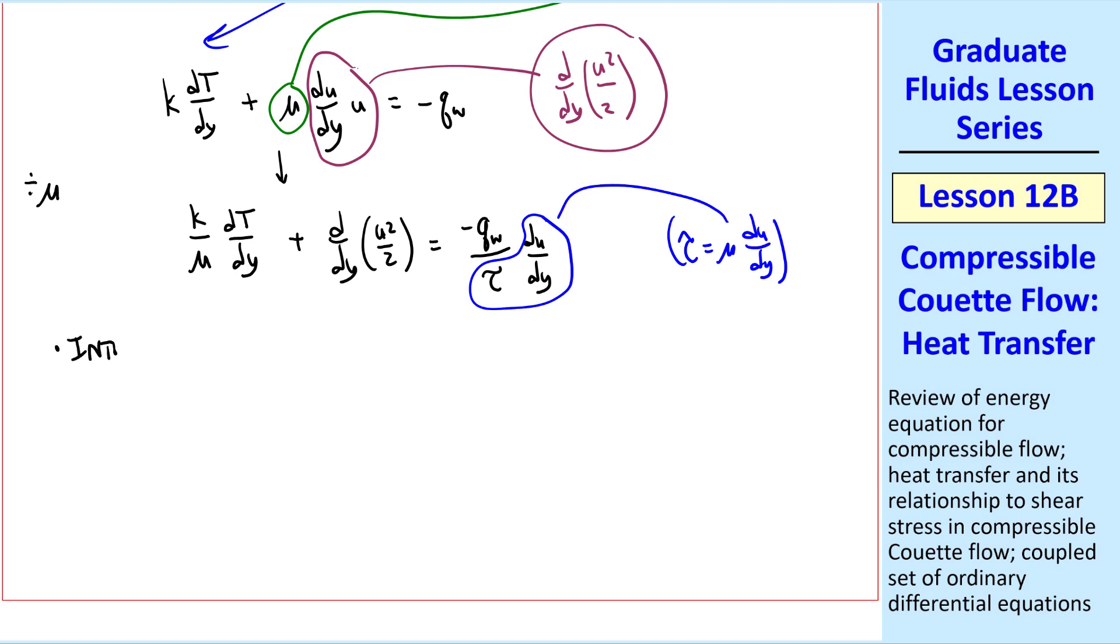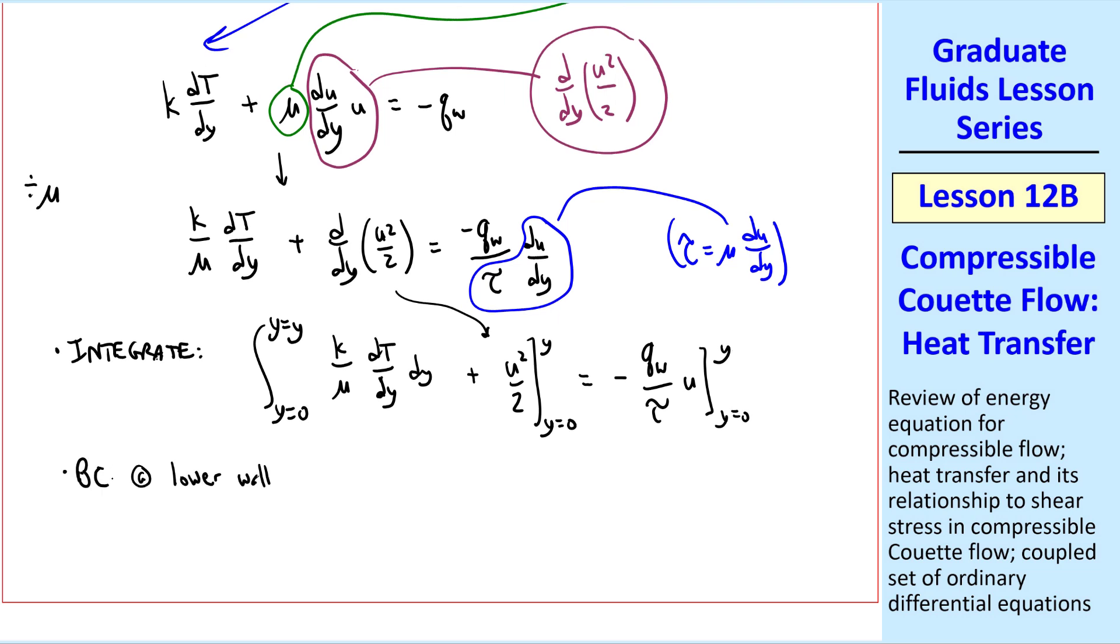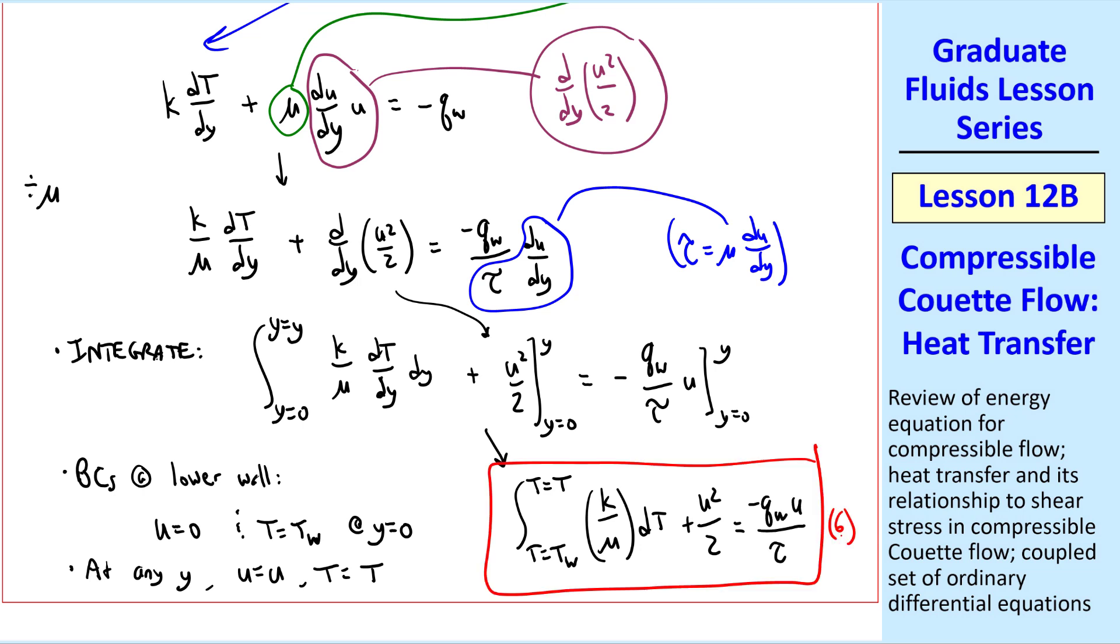Well, now we're in a form where we can integrate. We'll integrate from y equal 0 to y equal y. And I apologize to the true mathematicians here that I didn't change the variable, but this becomes the integral of k over mu dt dy dy. And this integral is simply u squared over 2, evaluated from 0 to y. And since both qw and tau are constants, they come out of the integral, and we just get u again from y equals 0 to y. Now, let's apply boundary conditions at the lower wall, where u equals 0, and t equal tw at y equals 0. At any y, in other words, the upper limit in these terms, u is just what we're calling u, and t is just what we're calling t. So we can rewrite this equation as the integral from t equal tw to t equal t, k over mu dt plus u squared over 2, equal negative qw u over tau. I'll call that equation 6.